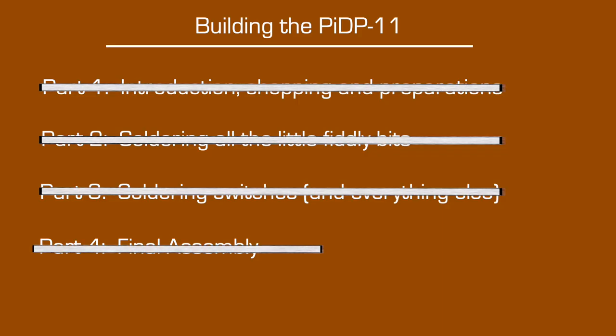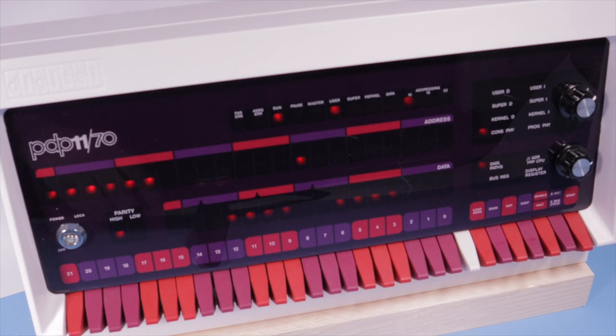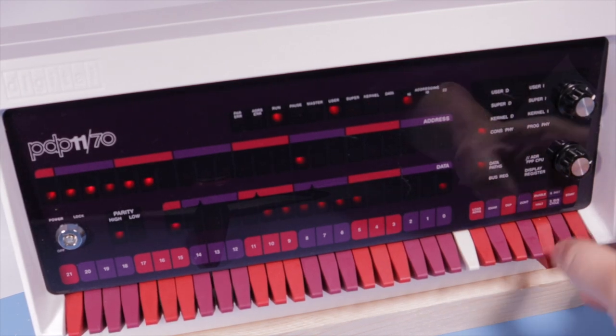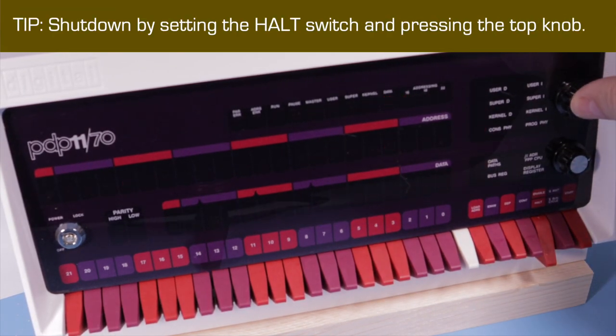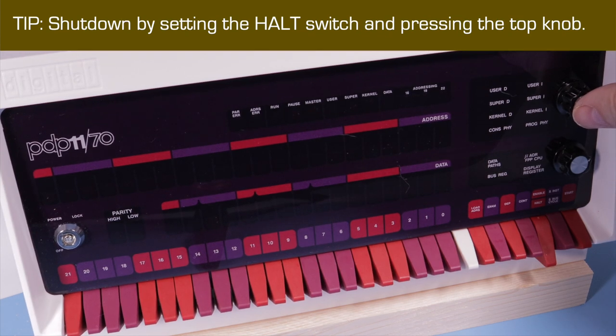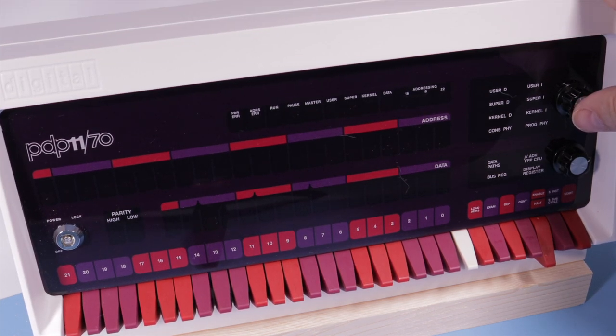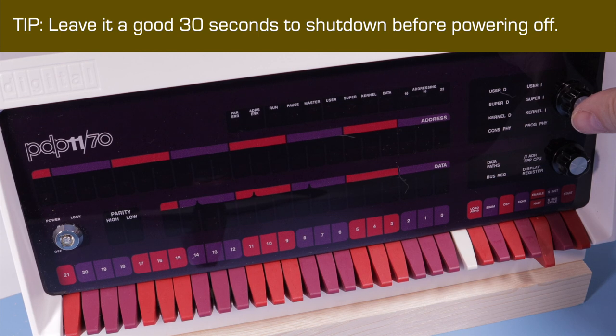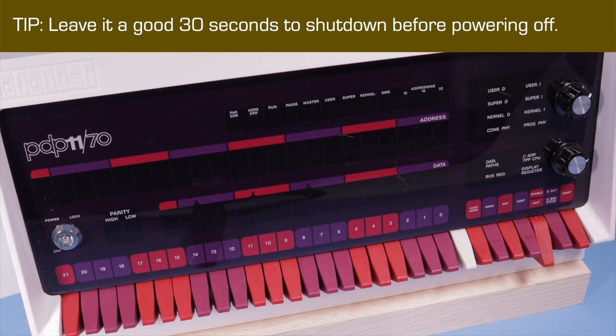If that all tests out, you're finished with the build. So the last thing you do is shut down the machine. Once again setting the halt switch, if you press that top knob again, instead of resetting into a different image, it's going to shut down the Pi. Give it about 30 seconds before taking the power off.